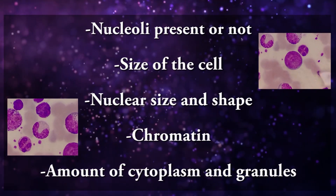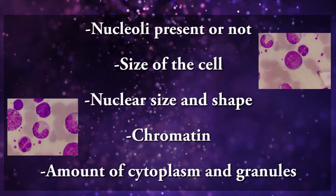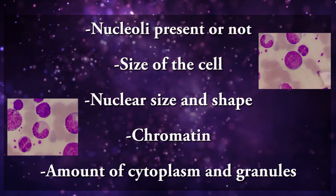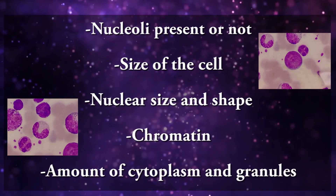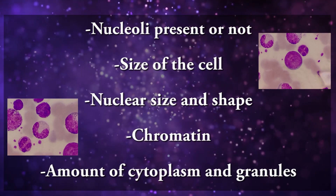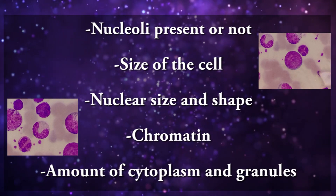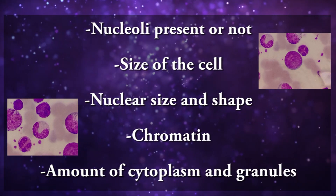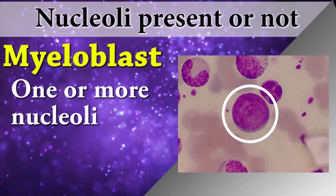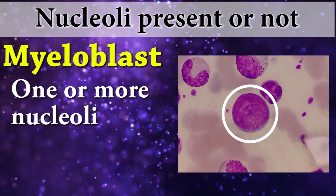I will compare the five types of immature white blood cells using those characteristics: nucleoli present or not, size of the cell, nucleus size and shape, chromatin, amount of cytoplasm, and granules. First one is nucleoli present or not.